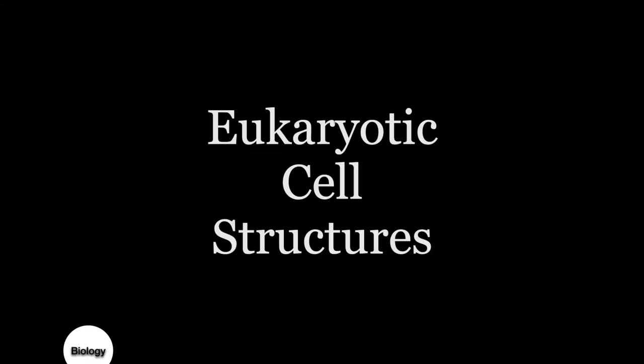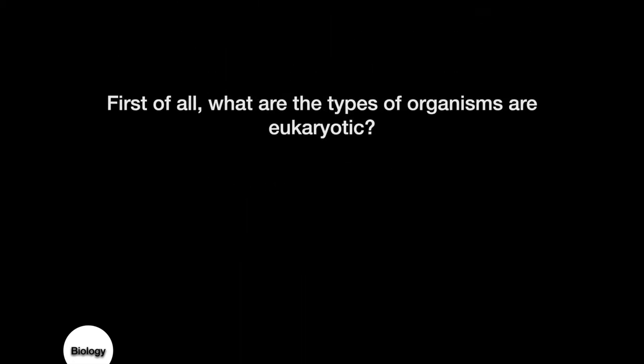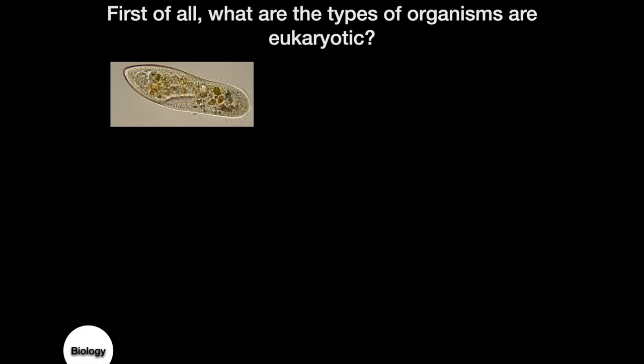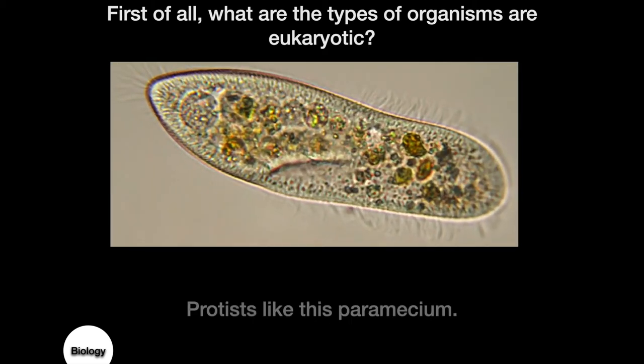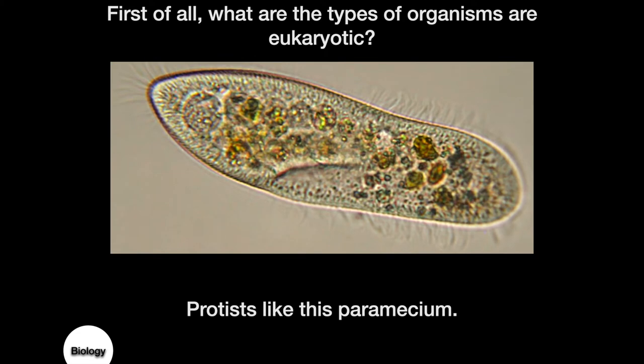In today's lecture we are going to be covering eukaryotic cell structures. First, what are the types of organisms that are eukaryotic? From our last lecture we talked about protozoa — single-celled eukaryotic organisms like this paramecium. Notice that this organism has cilia around the outside cell membrane and several structures on the inside. This location here is called the gullet, where food material is brought into the organism.